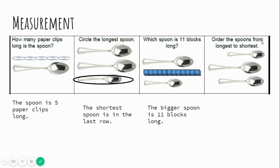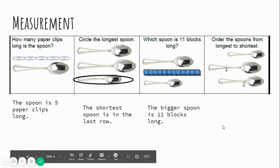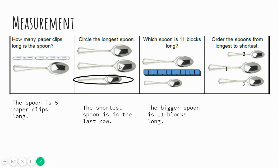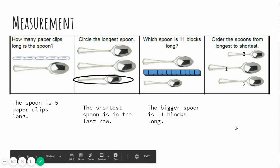Order the spoons from longest to shortest. So from longest to shortest, that means the biggest one to the smallest one. Which one is the biggest, the longest spoon? Good. This one is the longest spoon. Then this one's next. And that one is last. Awesome job. Sorry about this, guys. Let's keep going.